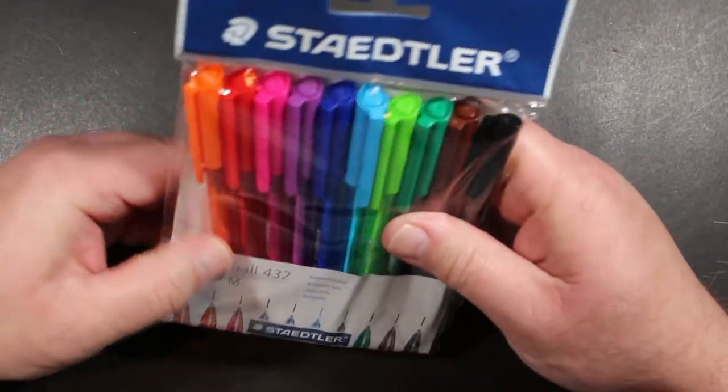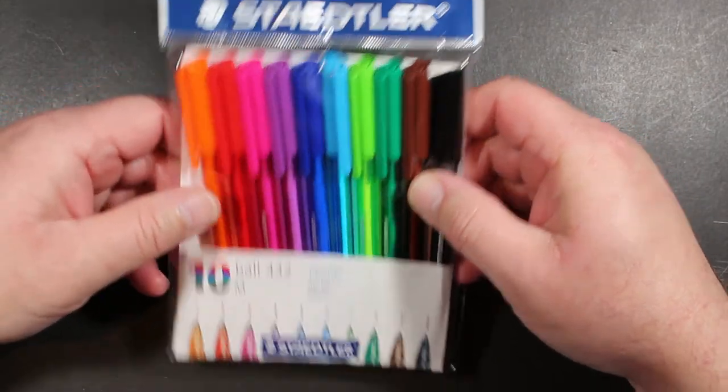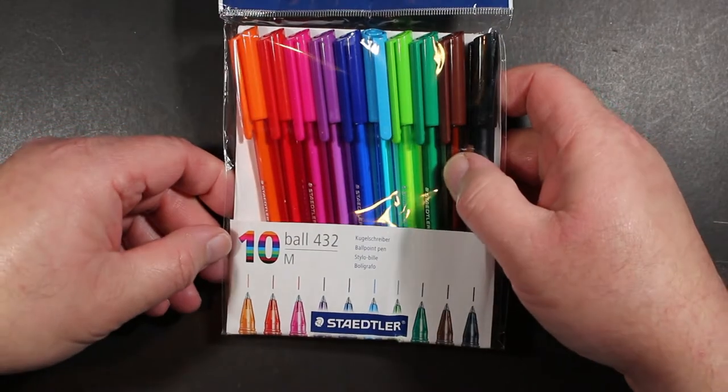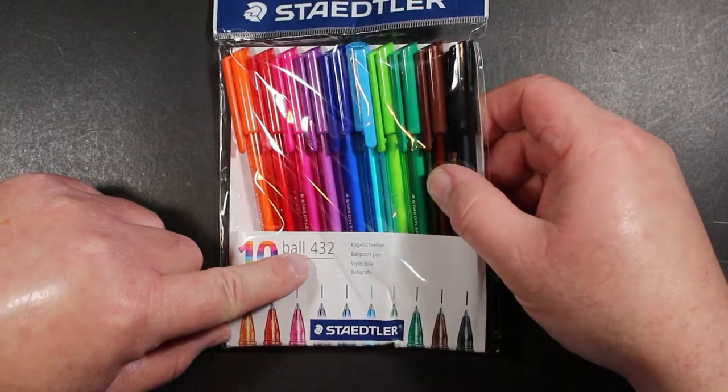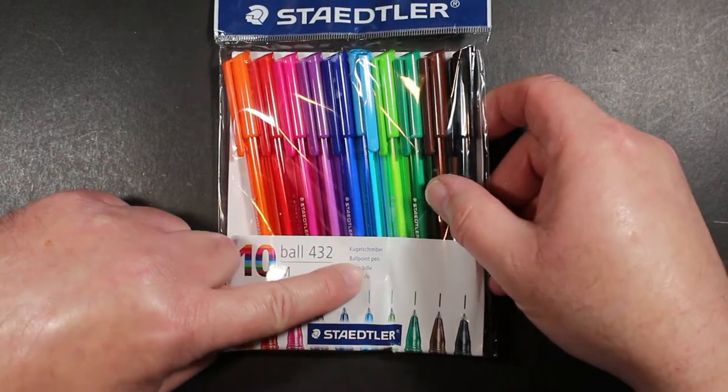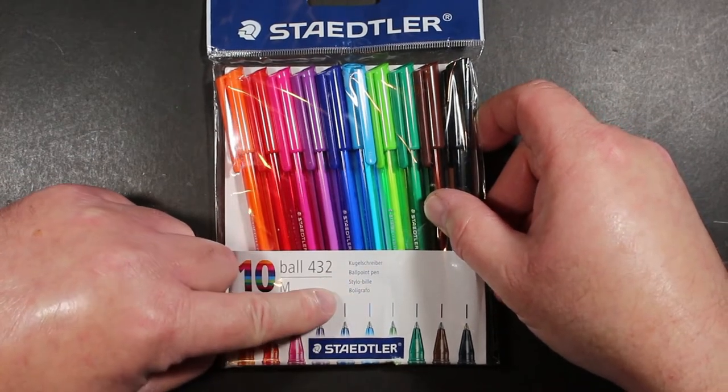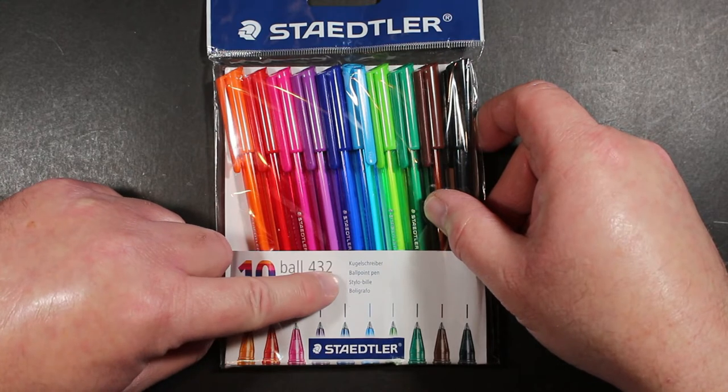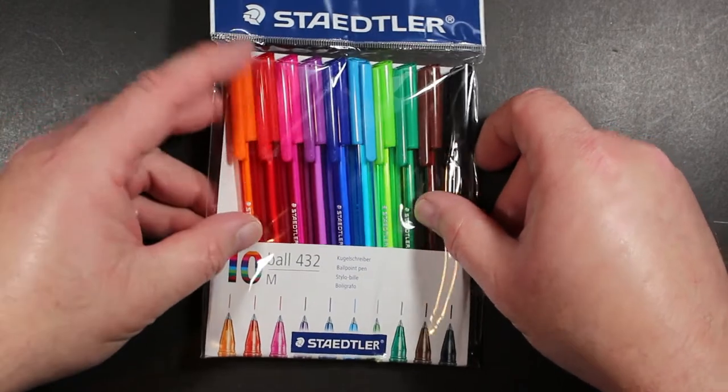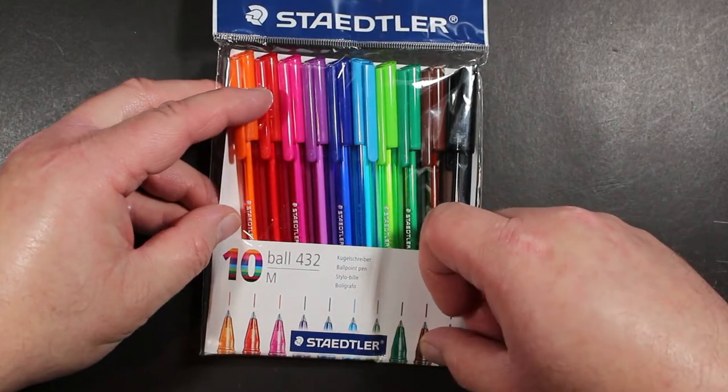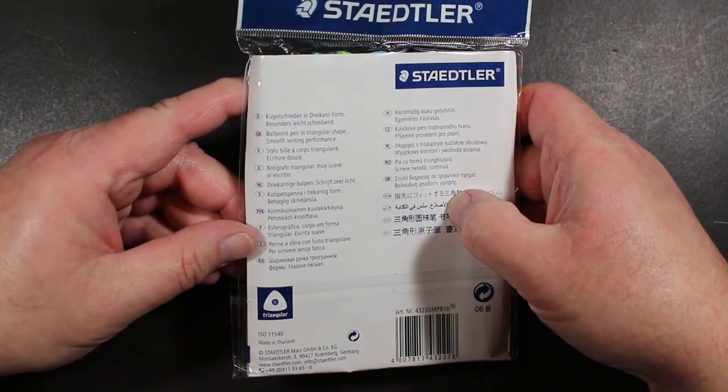So here is the package. It is a cellophane pack. And here we've got 10 pens in here. Ball 432 Ballpoint Pen. You can see it's multilingual here for a number of different markets. So Staedtler. And we'll look on the back here and see what else it tells us.